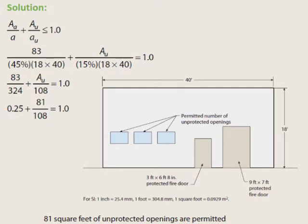For this example, 83 square feet are protected openings. Protected openings are permitted by Table 705.8 to encompass up to 45% of the 720 square foot wall, which is 324 square feet. Only 25% of the wall area permitted to consist of protected openings does consist of protected openings. The balance — 75% — is then carried over for the unprotected openings. Unprotected openings are permitted by Table 705.8 to encompass up to 15% of the 720 square foot wall, which is 108 square feet. 75% of 108 is 81 square feet.